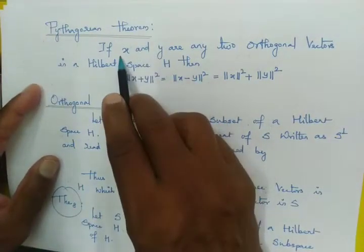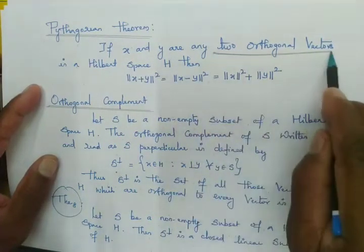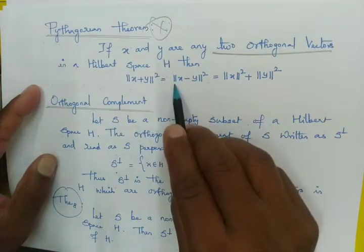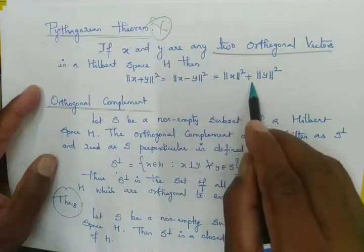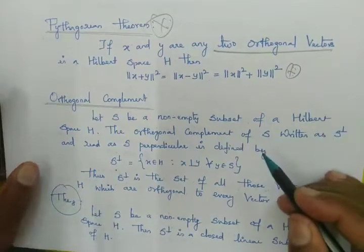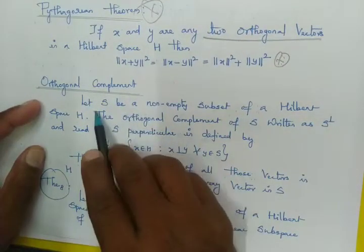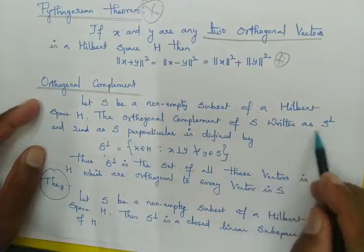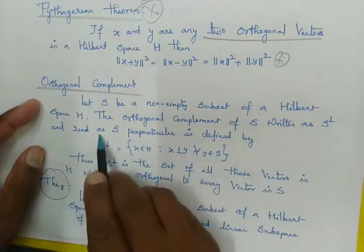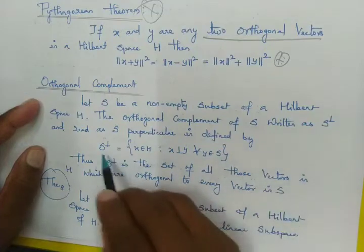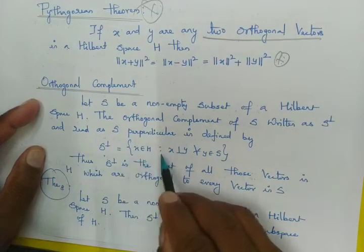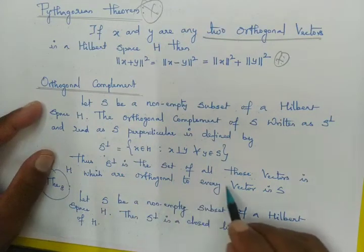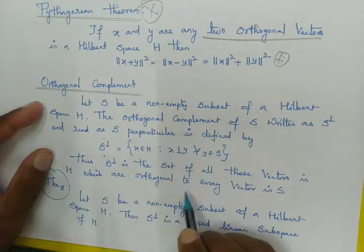Pythagorean theorem: If x and y are any two orthogonal vectors in Hilbert space H, then ‖x + y‖² = ‖x − y‖² = ‖x‖² + ‖y‖². Orthogonal complement: Let S be a non-empty subset of Hilbert space H. The orthogonal complement of S, written S⊥ and read as S-perpendicular, is defined as S⊥ = {x ∈ H : x ⊥ y for all y ∈ S}. Thus S⊥ is the set of all vectors in H which are orthogonal to every vector in S.